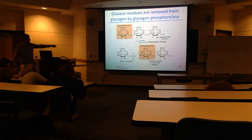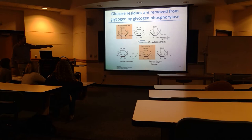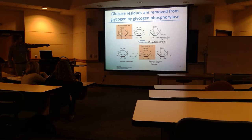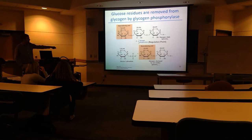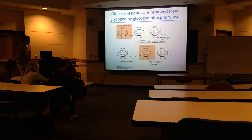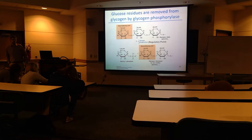Glycogen phosphorylase takes inorganic phosphate and adds it across the bond between glucose sugars at the non-reducing end, breaking the alpha-1,4 linkages. You get phosphate attached at the first position — you get glucose-1-phosphate. That's the form in which glucose gets kicked off the glycogen. The phosphate comes from inorganic phosphate, and the glycogen is shortened by one glucose.